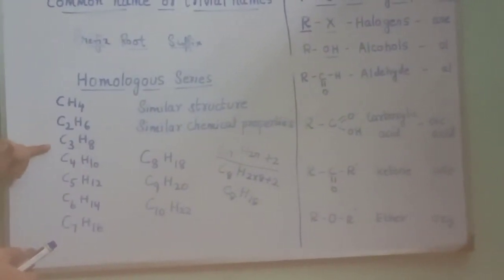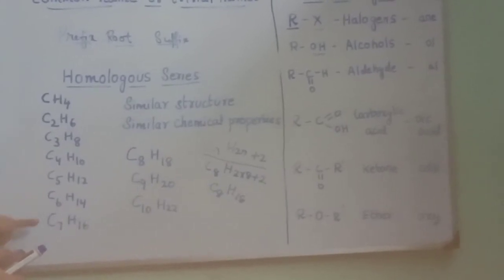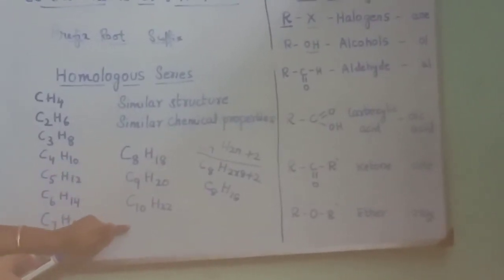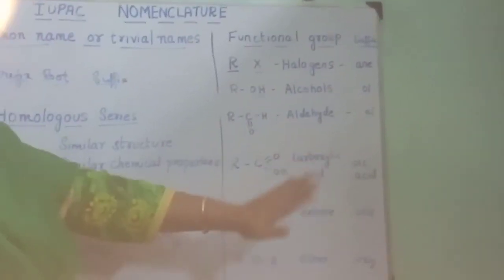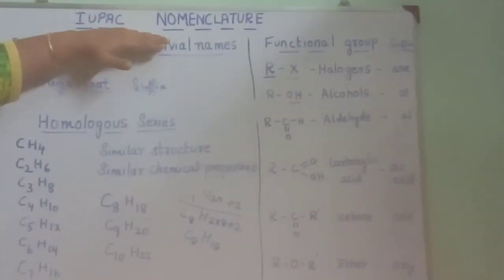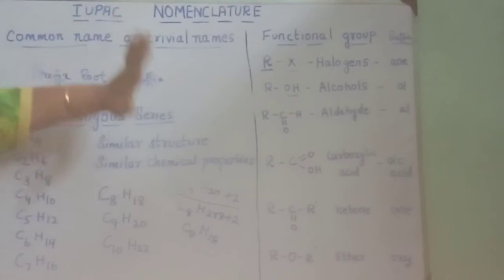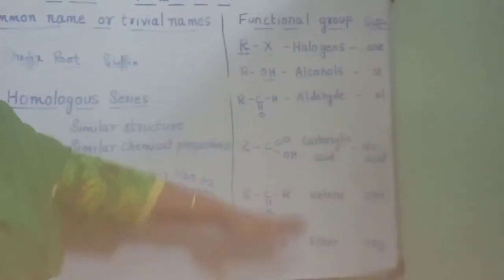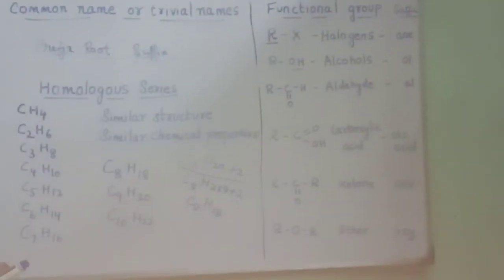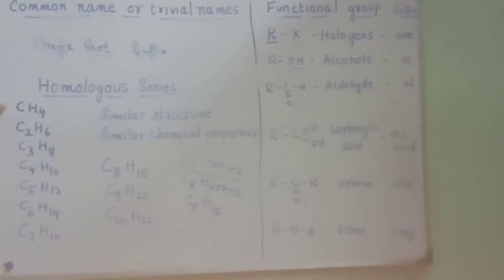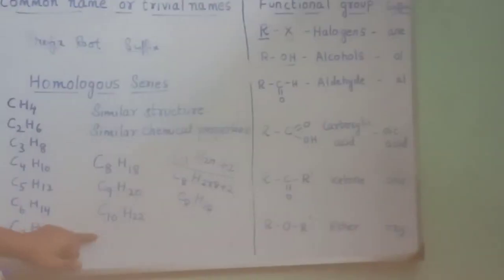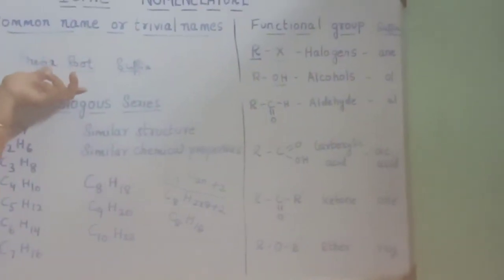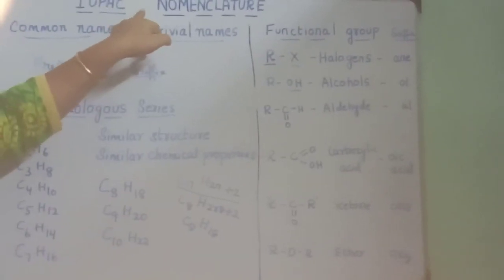We need to know the alkane names in order: methane, ethane, propane, butane, pentane, hexane, heptane, octane, nonane, decane. If we know these names along with the functional group names, we will be able to write the nomenclature of compounds. Our work is to learn these functional groups and the root words of the alkanes. Once we know the root word and the suffix to be attached, it will be very easy for us to write the IUPAC nomenclature.